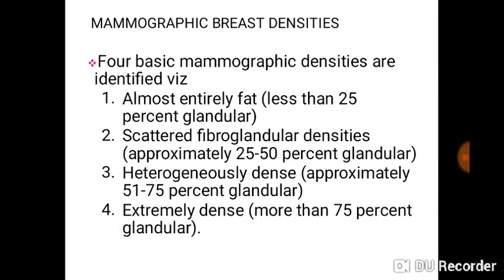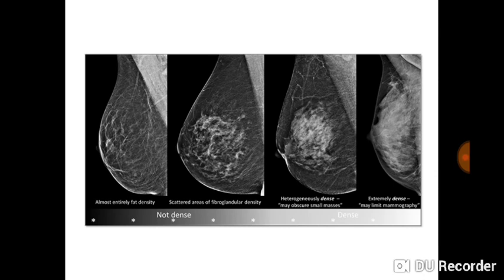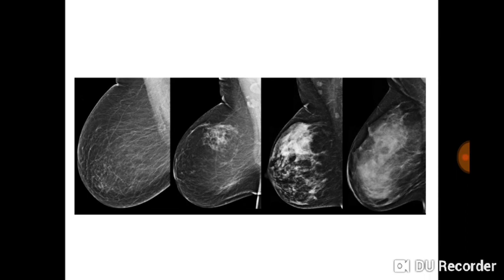There are several densities we can identify on a mammogram. You can have almost entirely fat, which is less than 25 percent glandular; scattered fibroglandular densities at 25 to 50 percent glandular; heterogeneously dense at approximately 51 to 75 percent glandular; and then the extremely dense breast, which is more than 75 percent glandular. These are types one, two, three, and four on the images.